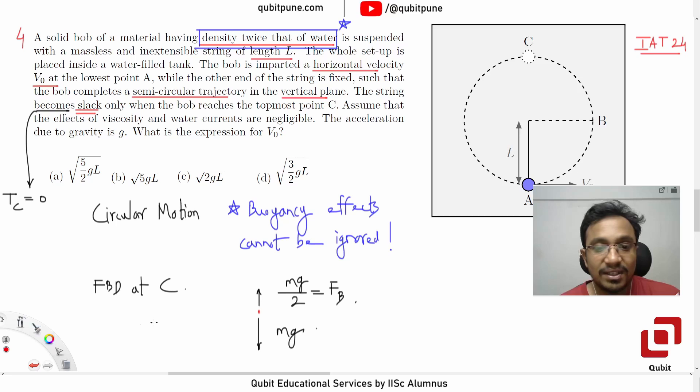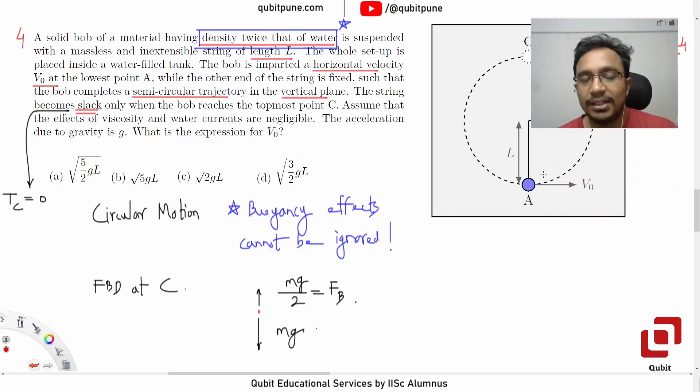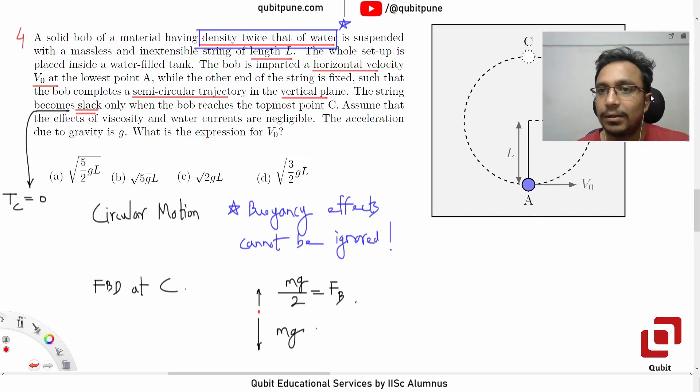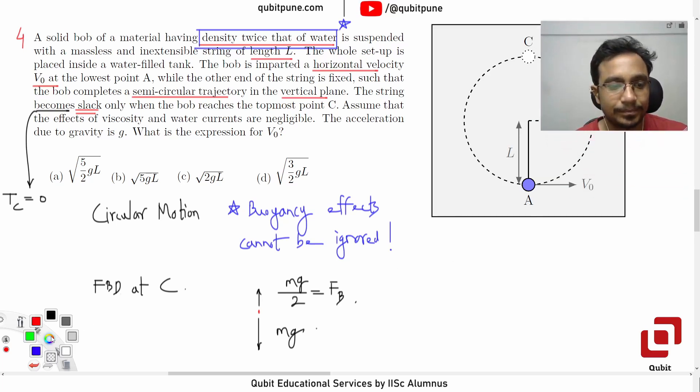Now, this is an incomplete free body diagram or incomplete in the sense, not balanced, which means this body must have an acceleration and what acceleration does it have? That acceleration at the top will be directed down. Correct. Must be directed downwards and that is centripetal acceleration.